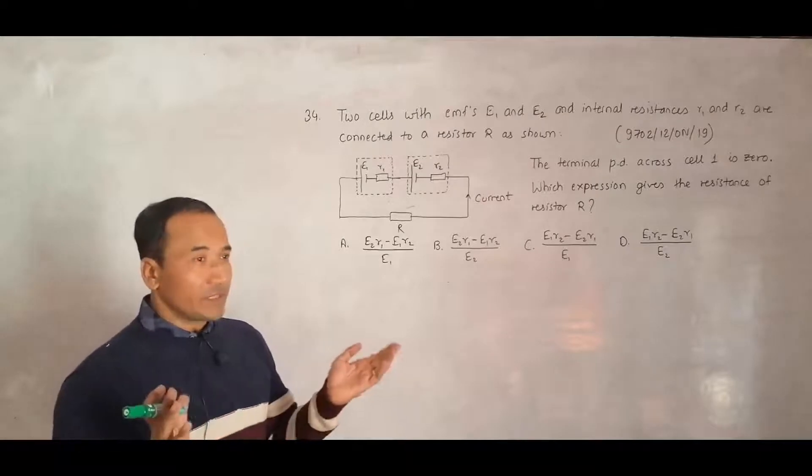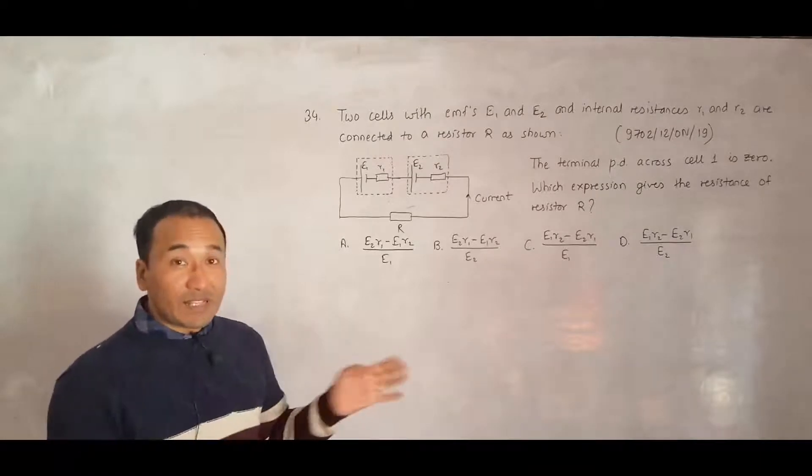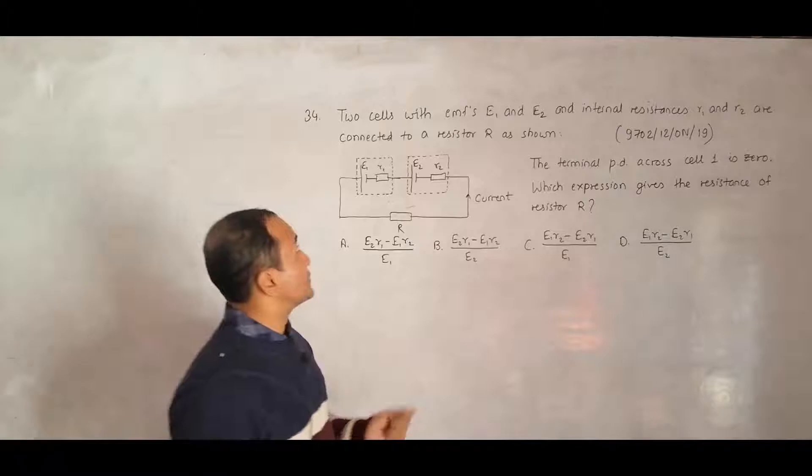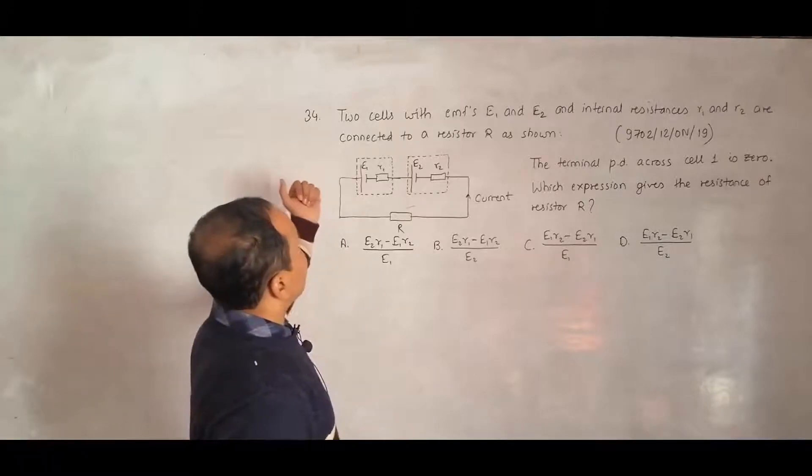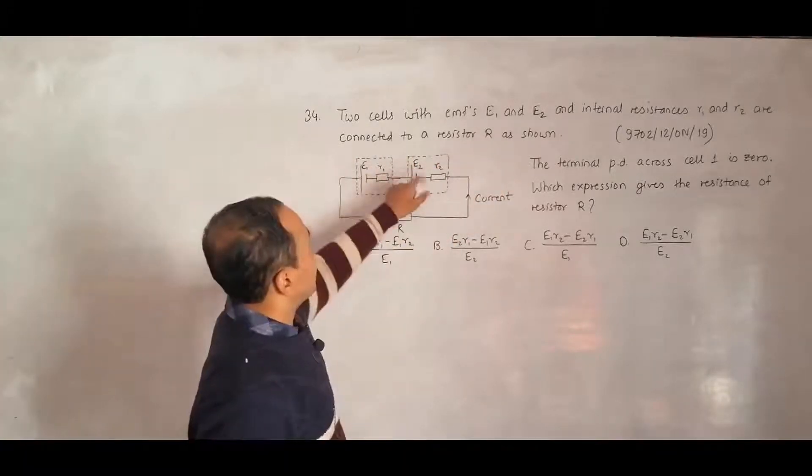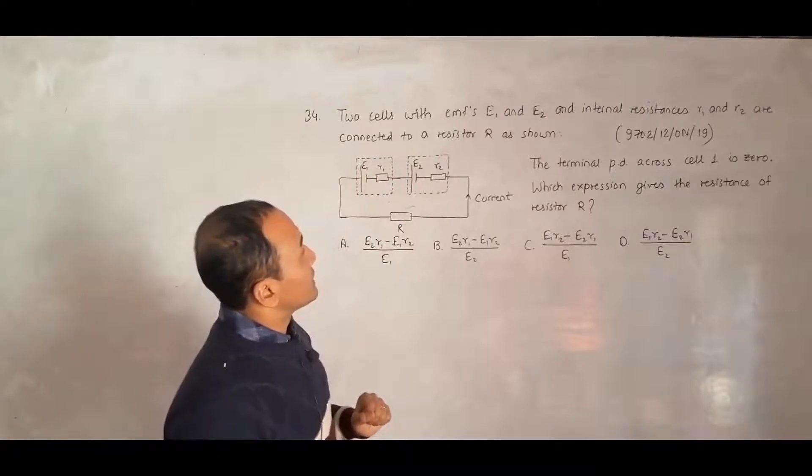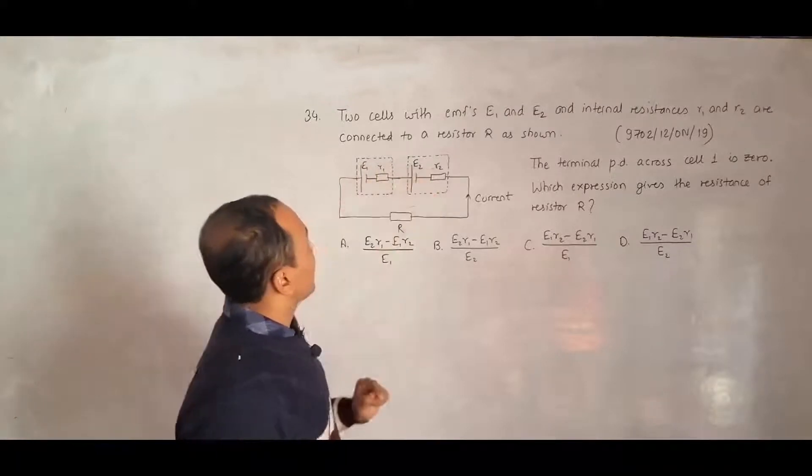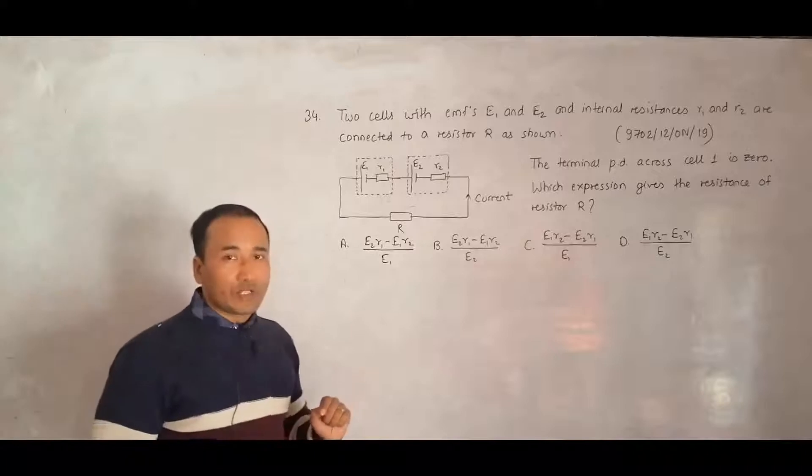We have to shift here and there, do simplification, use LCM, and split things up. It says that two cells with EMFs E1 and E2, and internal resistances R1 and R2, are connected to a resistor R as shown.